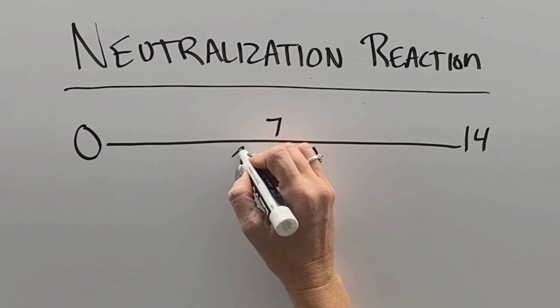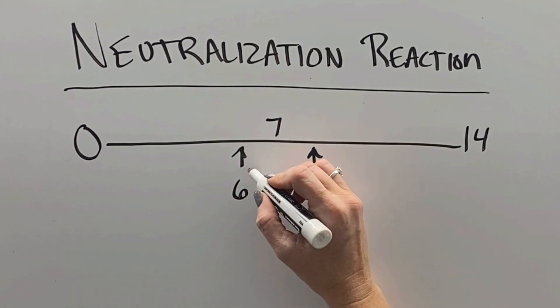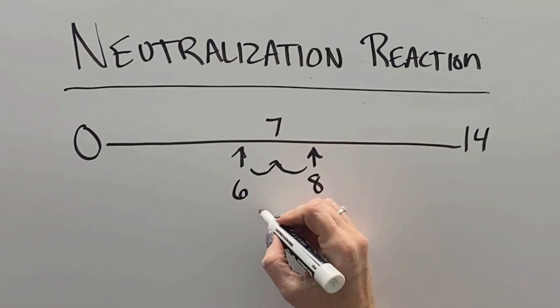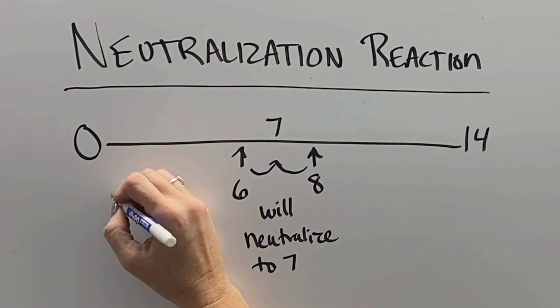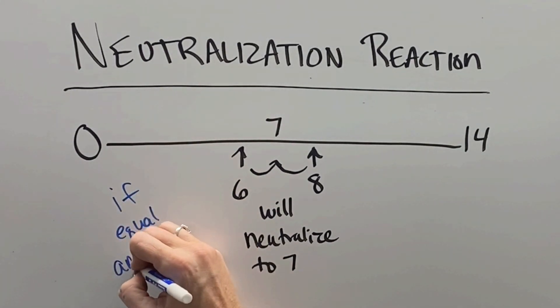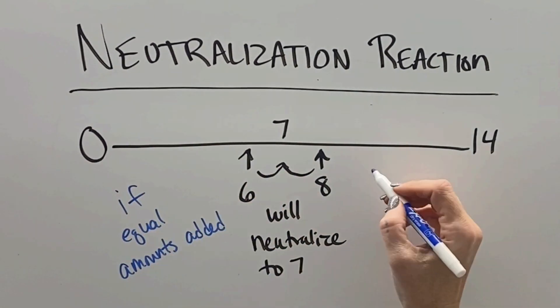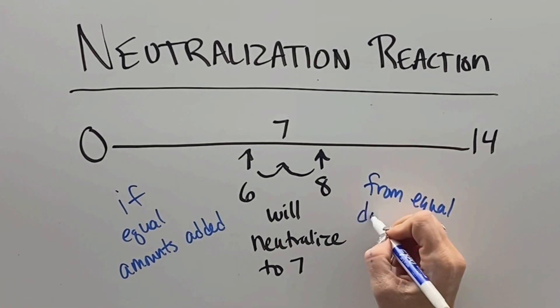In order to neutralize an acid or a base, you need something from the other side of the pH scale. If you had an acid with a pH of 6 and a base with a pH of 8, they will neutralize each other to be 7 because all the hydrogens and hydroxides combine to form water if equal amounts are added, since they're equal distances from 7.